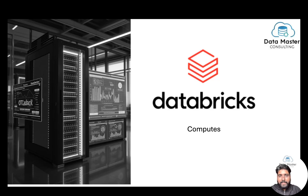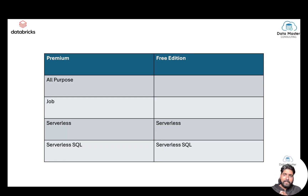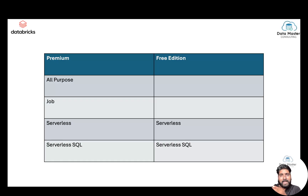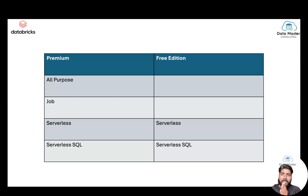Now let us see what are the different types of computes Databricks offers. There are different tiers — standard and premium — but I'll be talking about the premium tier, where you have Databricks SQL, Unity Catalog, Delta Live Tables, machine learning, and Gen AI. Databricks also recently launched the Databricks free edition. In the premium account, we have majorly three types of computes: all-purpose compute, job compute, and serverless SQL. A few months back, Databricks also launched a serverless compute.